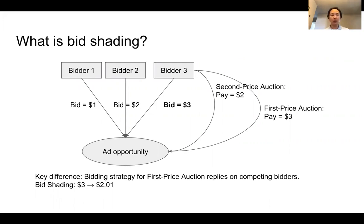For second price auction, we know that the optimal strategy for a bidder is to estimate the current ad opportunity and use its value as its bid price. However, this strategy would cause the winner to overpay for first price auction.